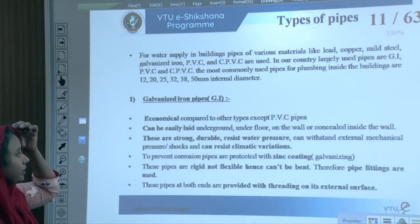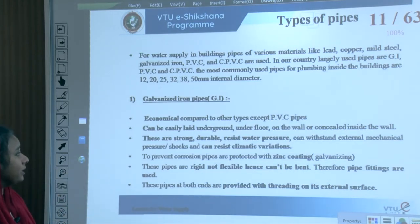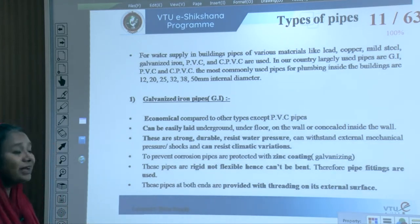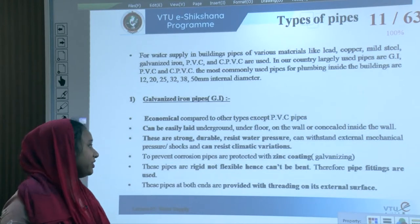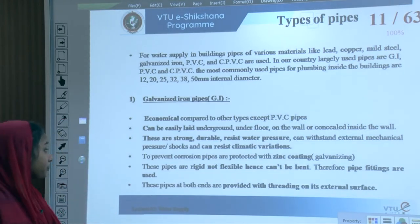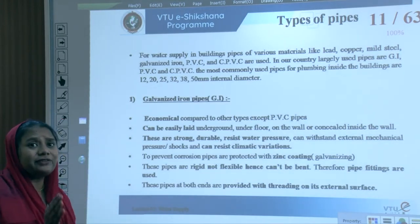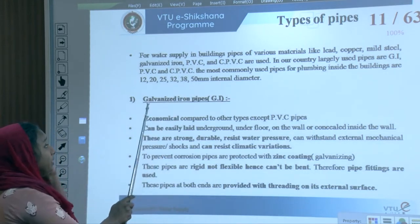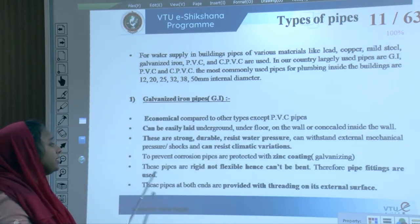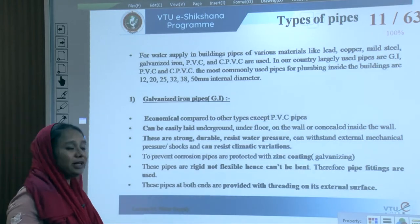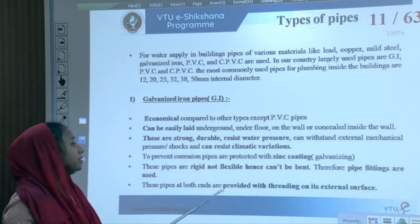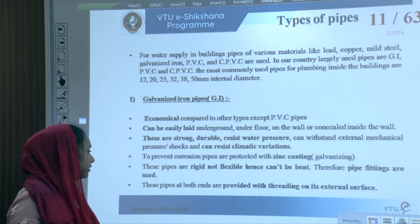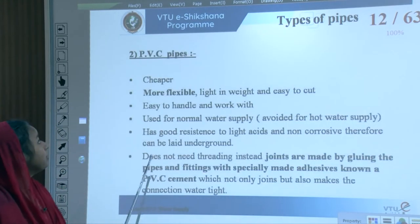Galvanized iron pipes are economical and easily laid underground. They are strong, durable, resist water pressure, and can withstand external pressure and shocks. They are protected with a zinc coating — hence the name 'galvanized iron.' These pipes are rigid and not flexible, so they cannot be bent; instead, pipe fittings with threading on external surfaces are used at both ends.